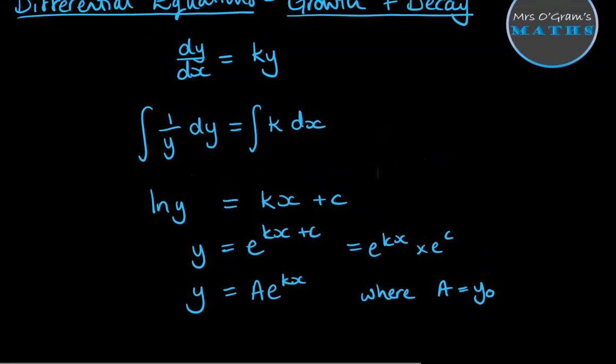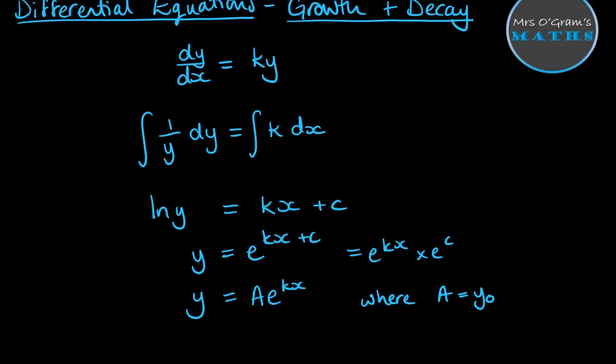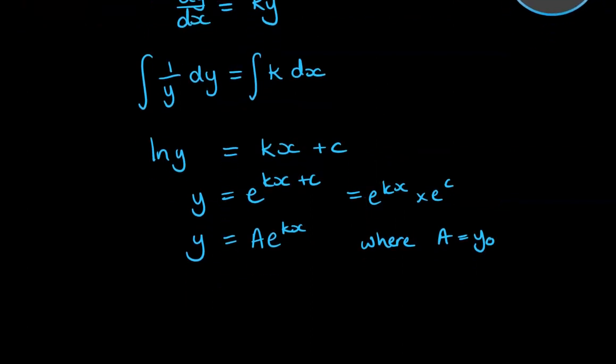So if you recognize that you have an equation of this form, you can go straight to using it in this form, y equals a e to the kx, and actually take it one step further and write it as y equals y₀ e to the kx. It's not necessary to memorize that, but it can make your steps through working through these questions a little bit faster.